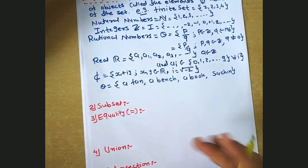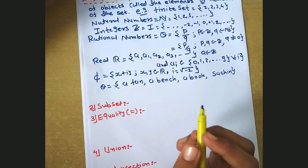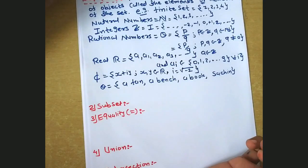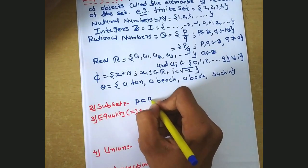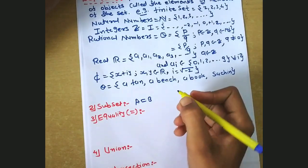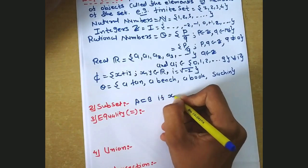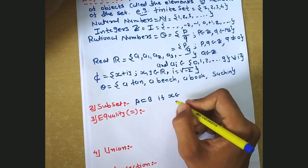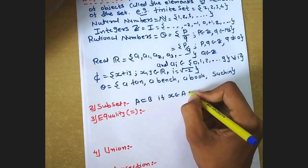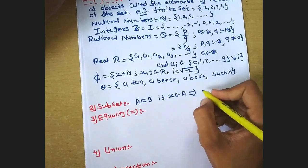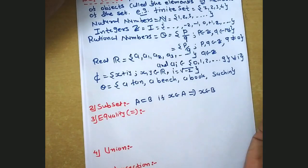Next, the definition of a subset. Suppose A and B are two sets. Then A is a subset of B if every element x that belongs to A also belongs to B.